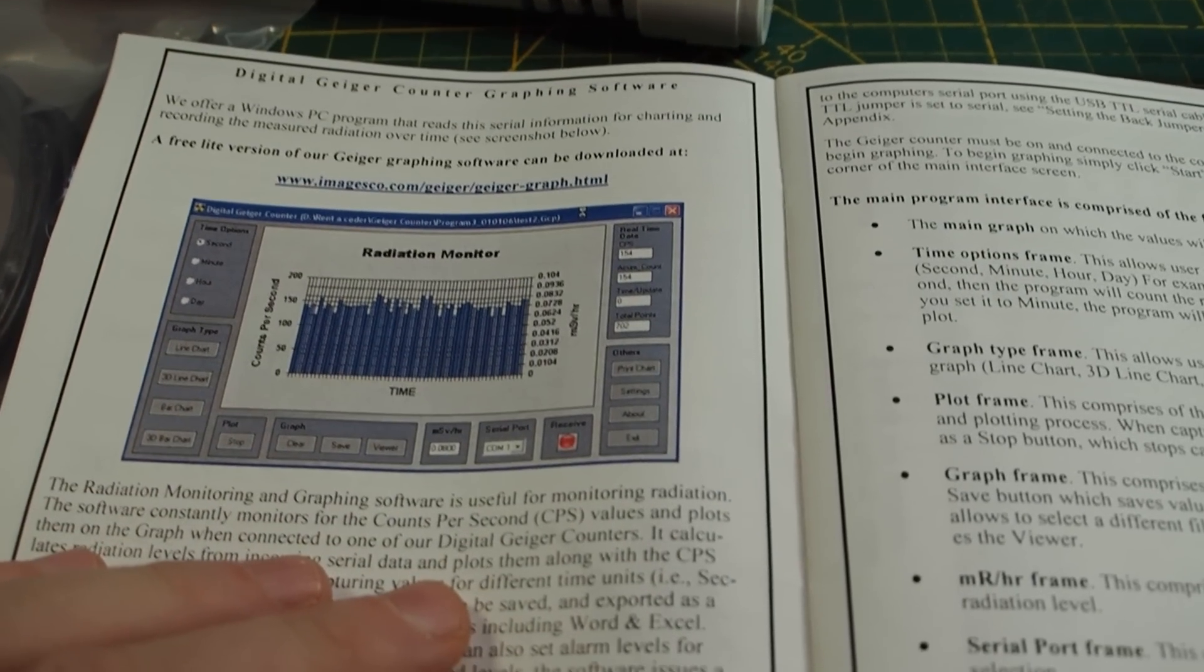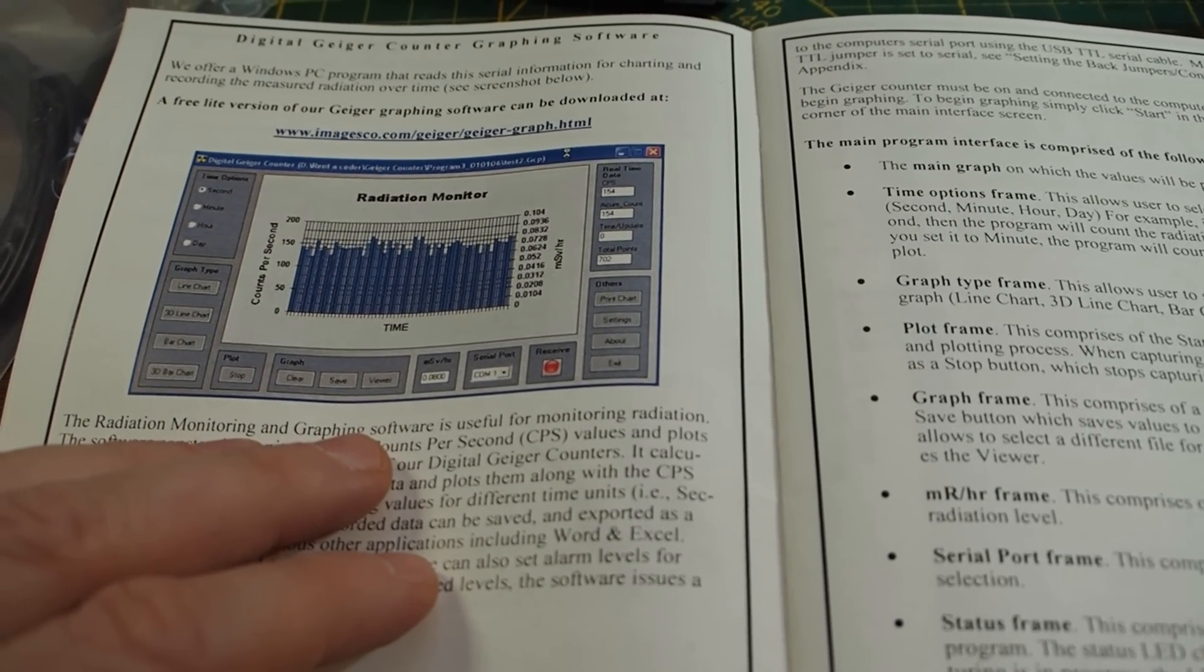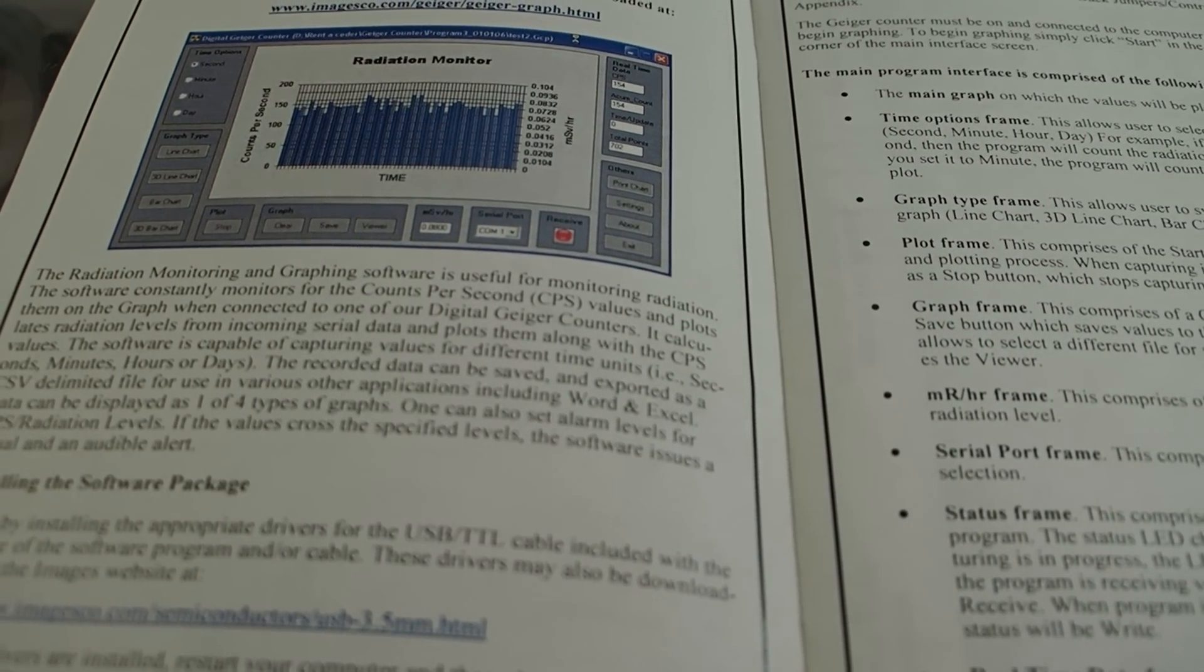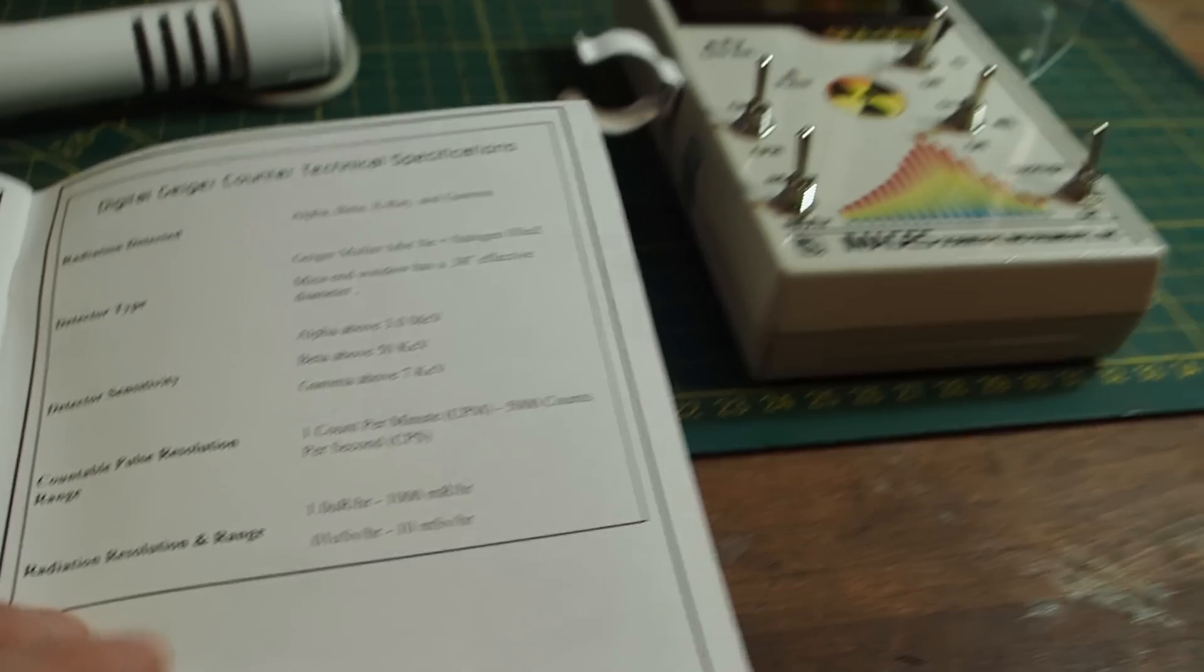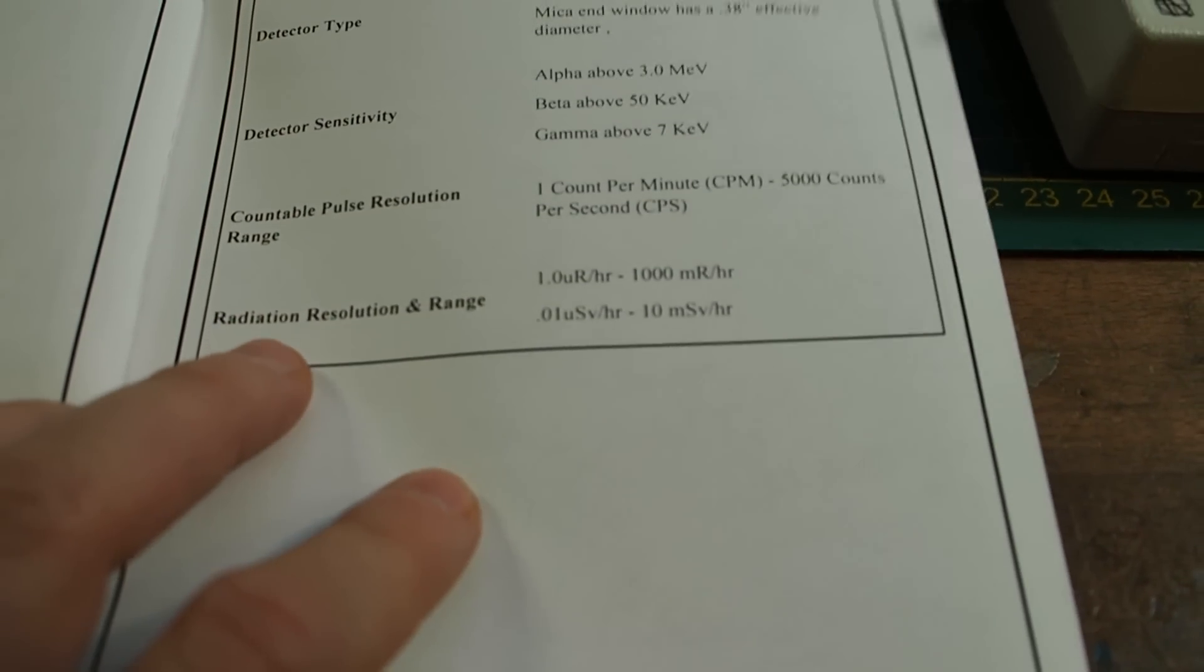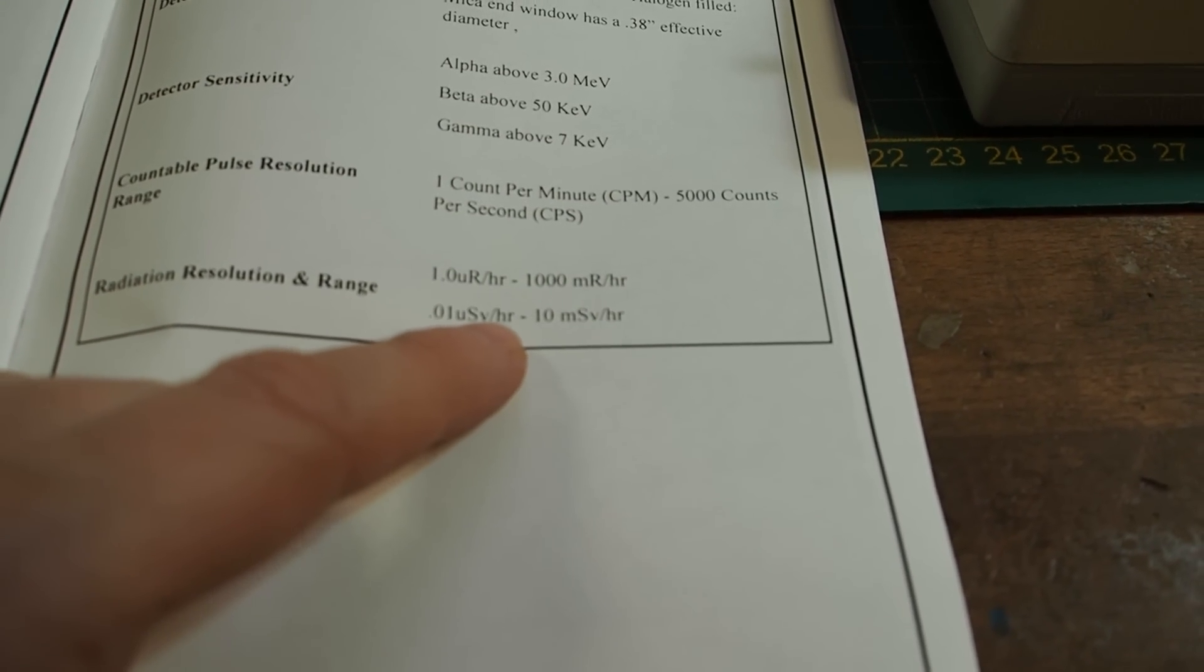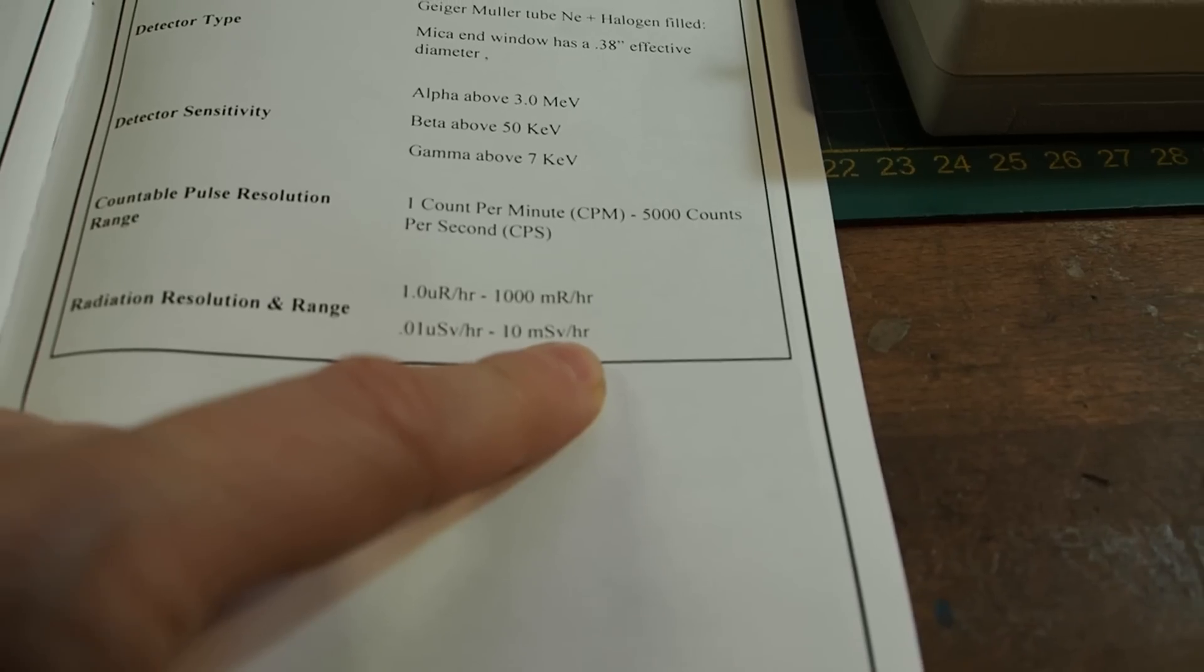Then also they are offering a radiation monitoring free software that you can download and then you can take a look at your measurements. So that's pretty awesome. Also here it's telling us again about the radiation resolution and range so it's going from 0.01 microSieverts to 10 milliSieverts per hour.